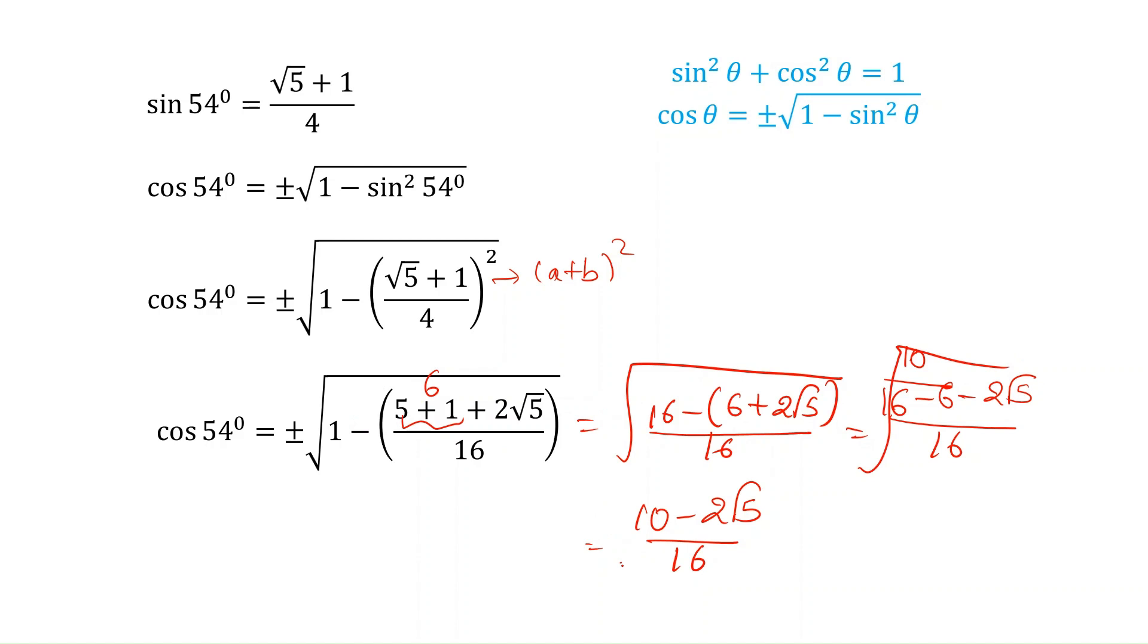The entire term is under square root actually. So for the square root, the numerator will be 10 as it is. And in denominator, root 16 is nothing but 4. Here in plus or minus, we are considering only plus because 54 will be in the first quadrant and we know in first quadrant, all the trigonometric ratios are positive. So we will just take the positive value here. This gives the value of cos 54 to be root 10 minus 2 root 5 upon 4.